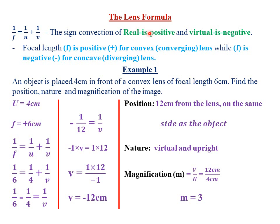The sign convention states that real is usually positive. Whenever you are measuring any real dimension — whether it is the real focal length or the real image distance — provided that the distance is real, it will always be indicated with a positive value. But for any virtual dimension, it is always indicated with a negative value. For example, the image distance for a virtual image, or the focal length for a virtual principal focus, will all be indicated with negative values.